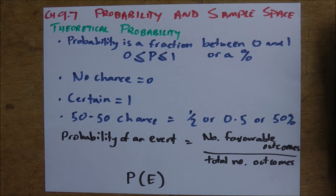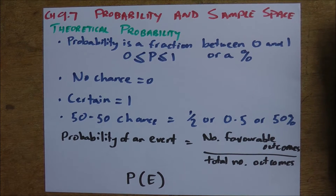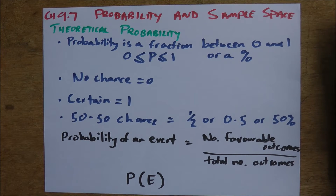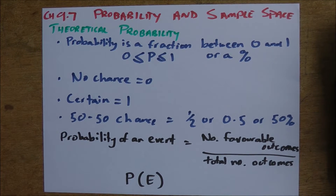Chapter 9.7: Probability and Sample Space. When we talk about probabilities, we're simply working out the chance that something's going to happen. We often refer to a theoretical probability, which is how we calculate mathematically the probability or the possibility that something's going to occur.